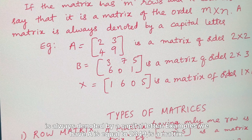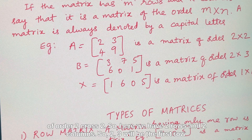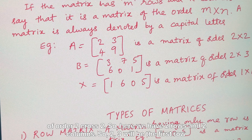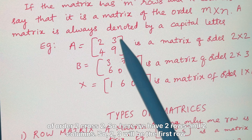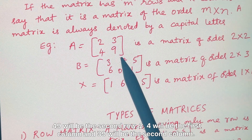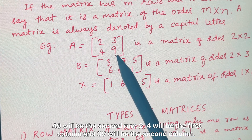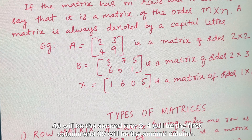For example, A = [2 3 / 4 9] is a matrix of order 2 cross 2. We have two rows and two columns. 2 3 is the first row, 4 9 is the second row, 2 4 is the first column, and 3 9 is the second column.